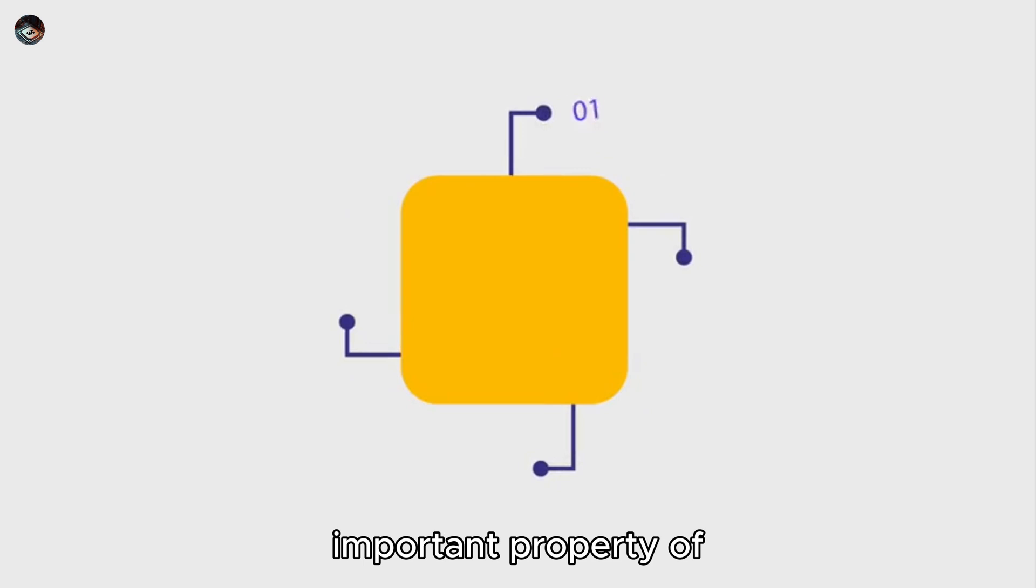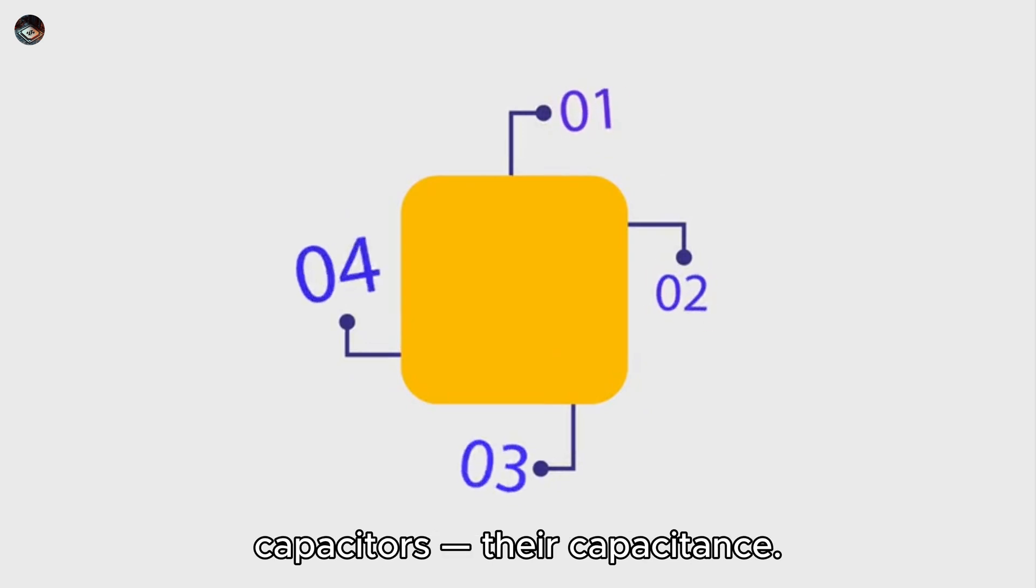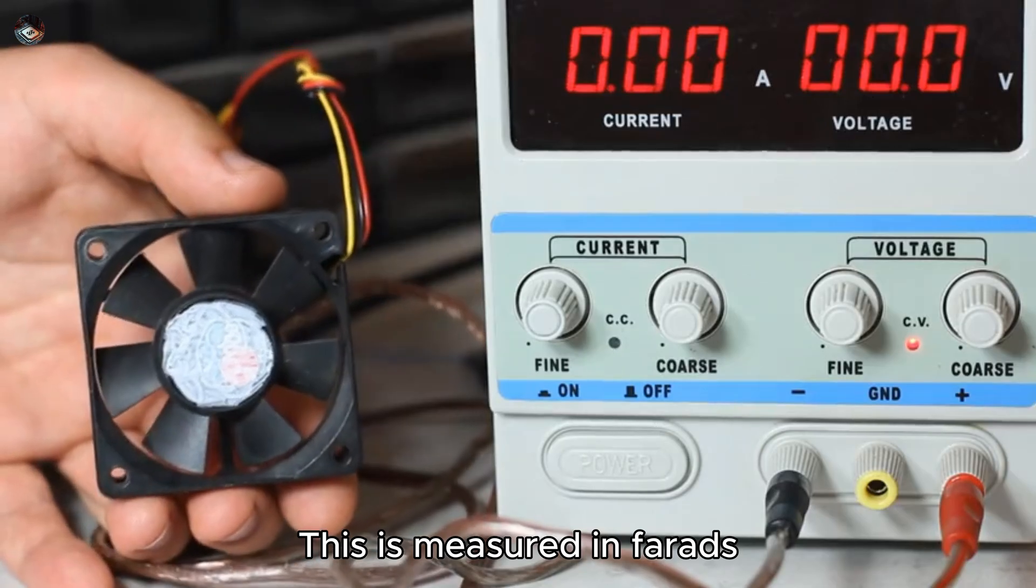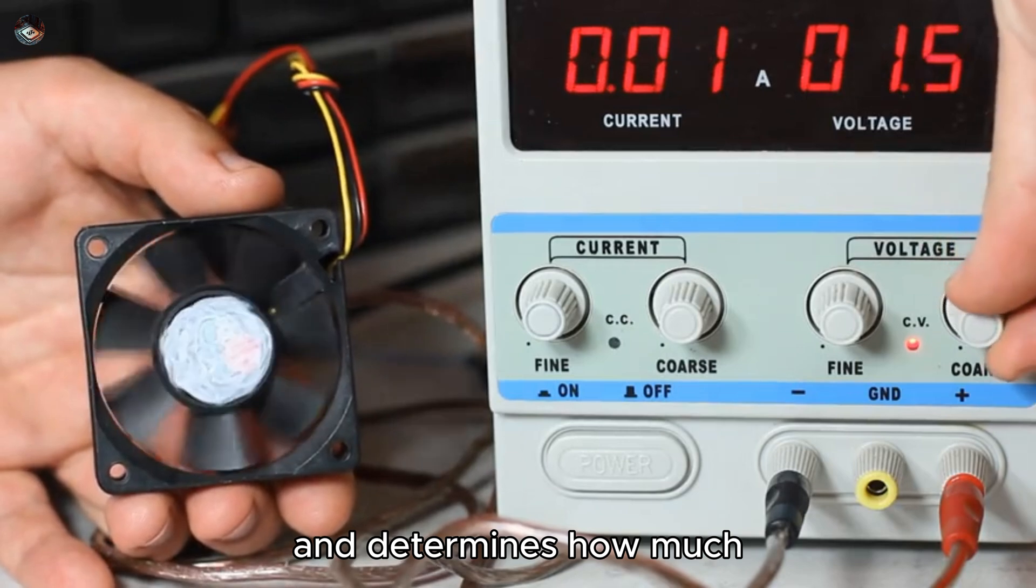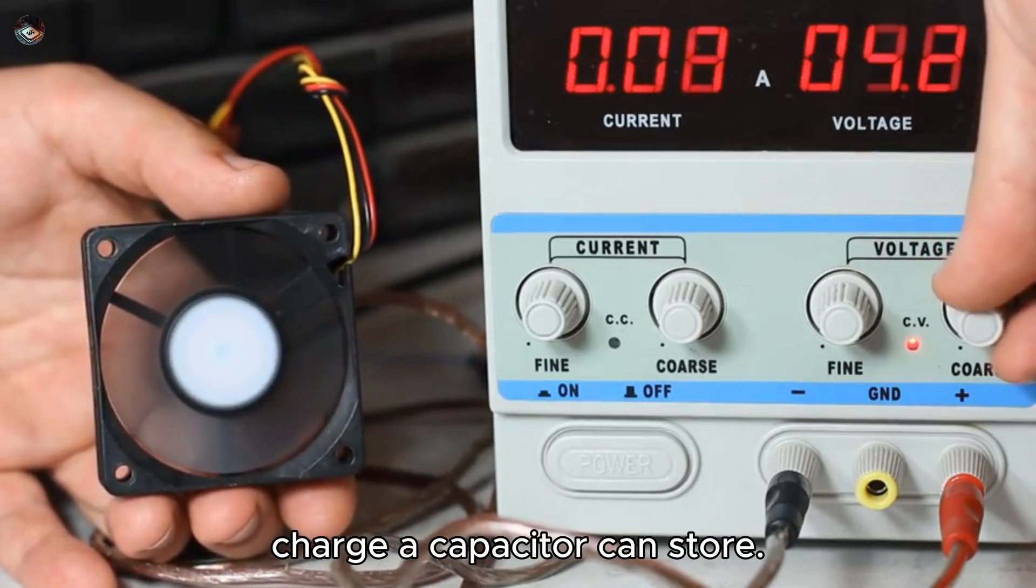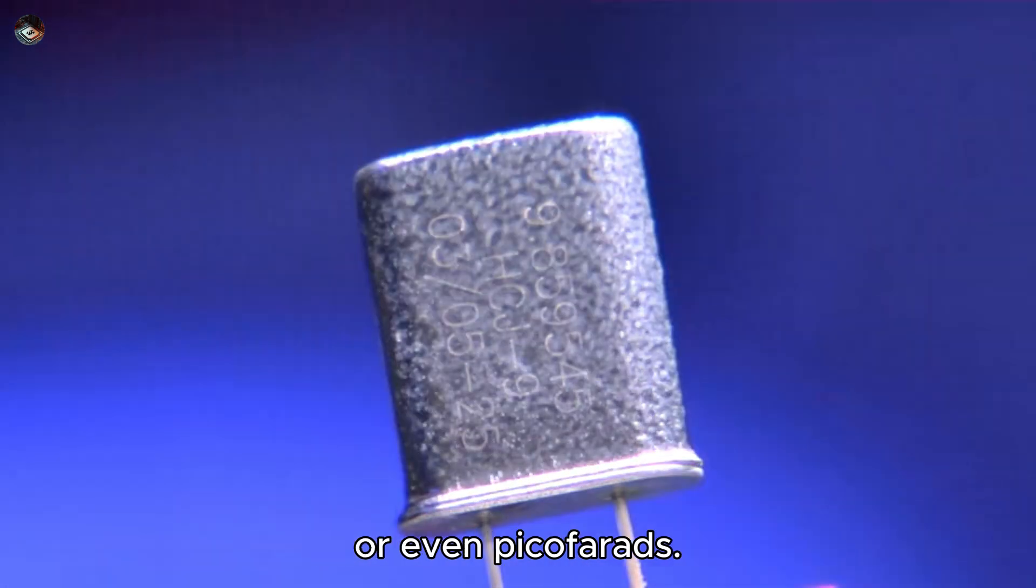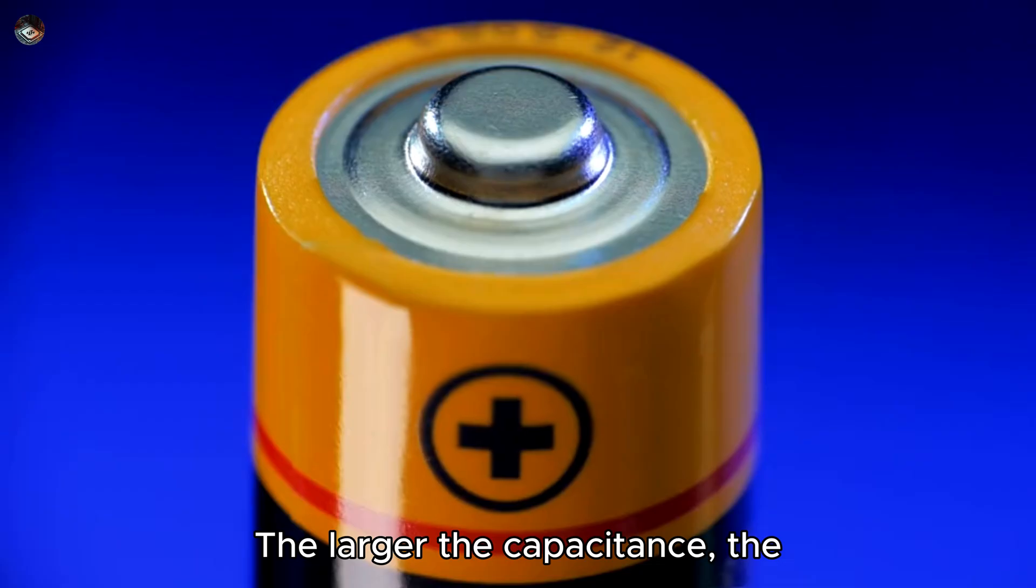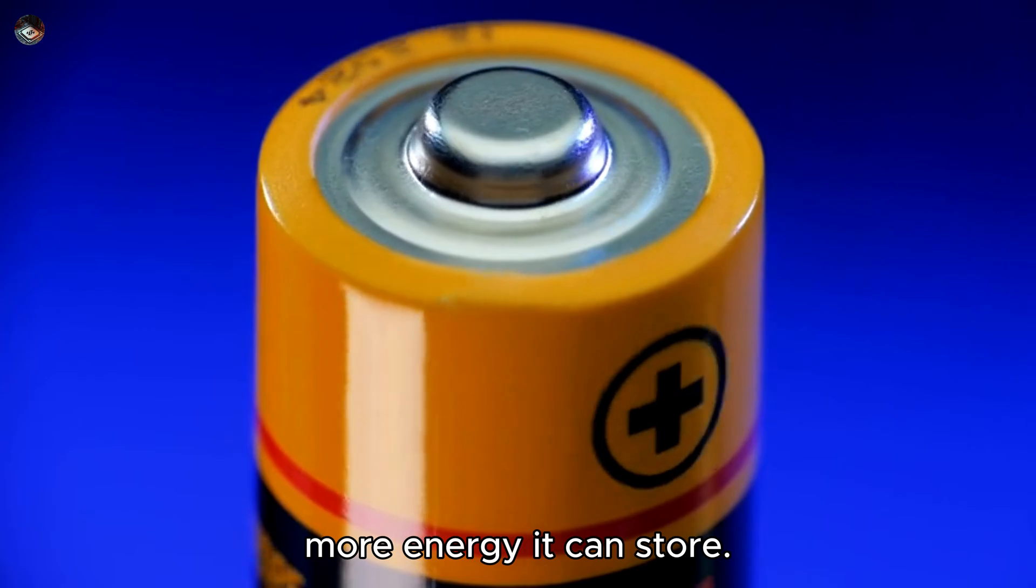Now, let's touch on an important property of capacitors, their capacitance. This is measured in farads and determines how much charge a capacitor can store. Small capacitors are measured in microfarads or even picofarads. The larger the capacitance, the more energy it can store.